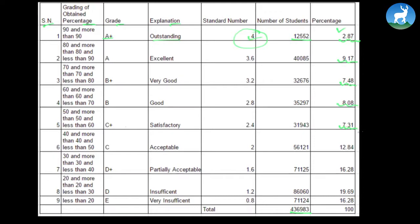Now here comes the twist. C, which is considered the acceptable form of marks, is quite average, and we have 12.84 percent of students in that. Now we have 16.28 percent in D+, and finally the maximum — that is 19.69 percent — is in D, which is quite an insufficient level of performance. Finally we have 16.28 percent in E, which is very very poor. That is what we have in the table.